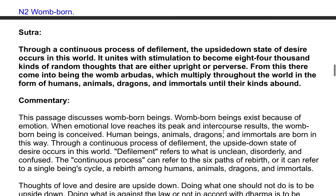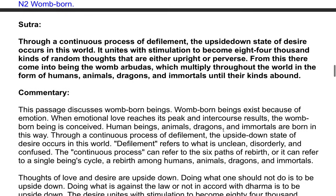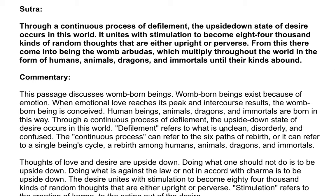Sutra: Through a continuous process of defilement, the upside down state of desire occurs in this world. It unites with stimulation to become 84,000 kinds of random thoughts that are either upright or perverse. From this there come into being the womb buddhas, which multiply throughout the world in the form of humans, animals, dragons, and immortals until their kinds abound. Commentary: This passage discusses womb-born beings. Womb-born beings exist because of emotion; when emotional love reaches its peak and intercourse results, the womb-born being is conceived. Human beings, animals, dragons, and immortals are born in this way.